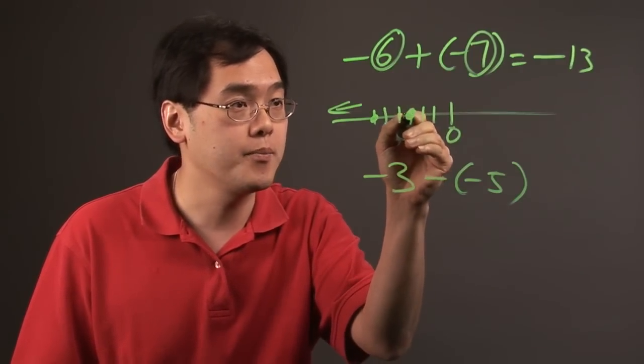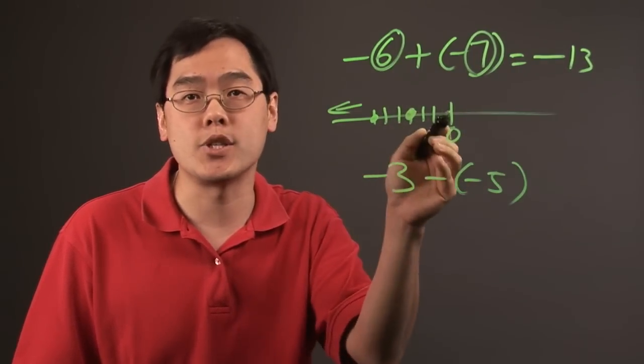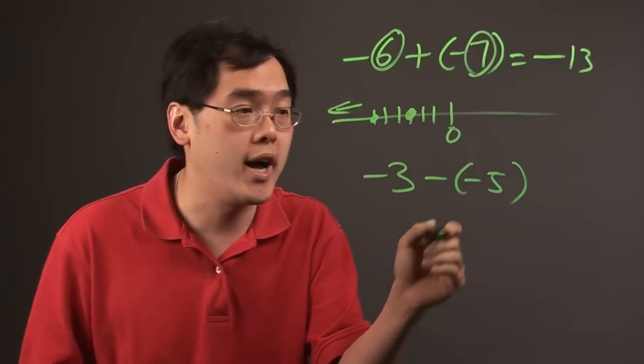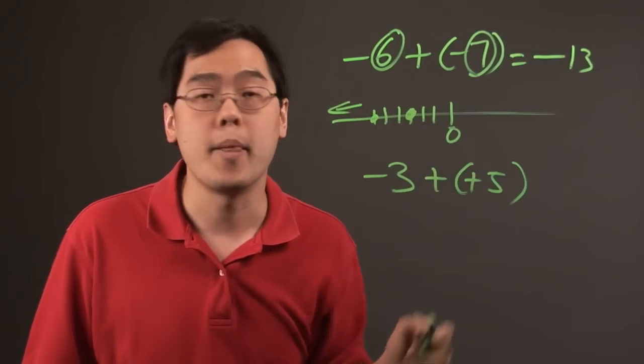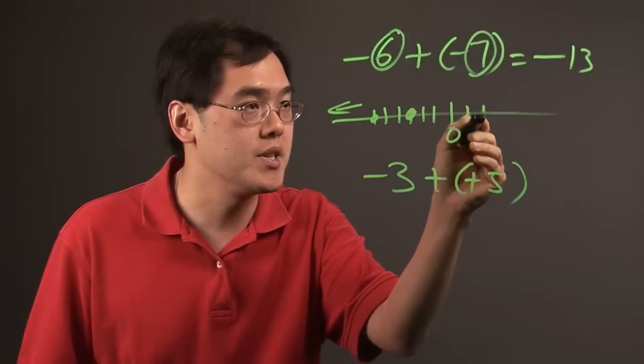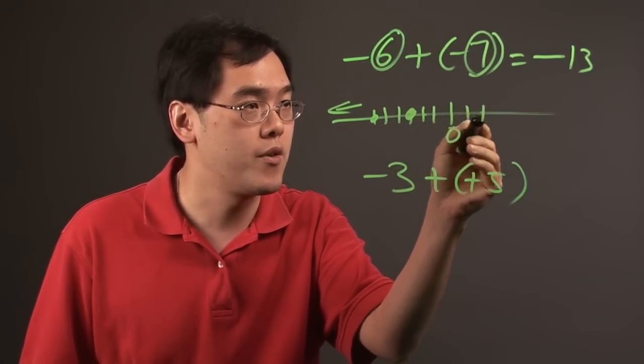If you have -3, subtracting a -5 means you're going to go in the opposite direction five places, which is why two negatives make a plus. That means you're going to go to the right five places: 1, 2, 3, 4, 5.